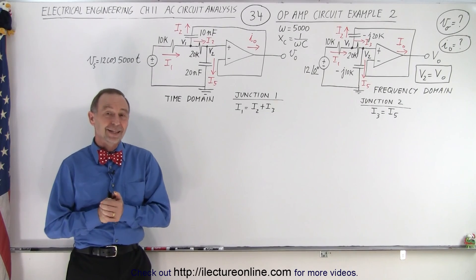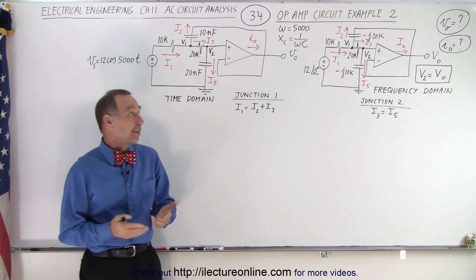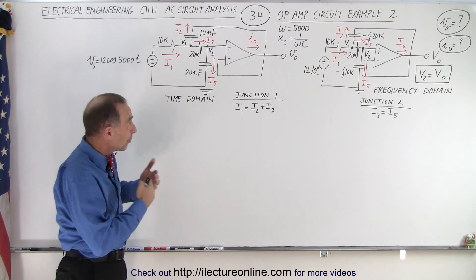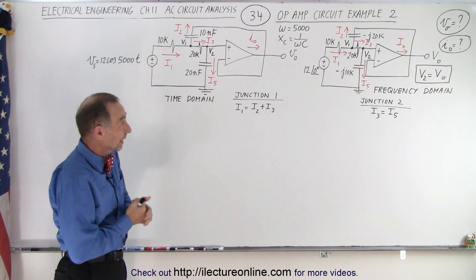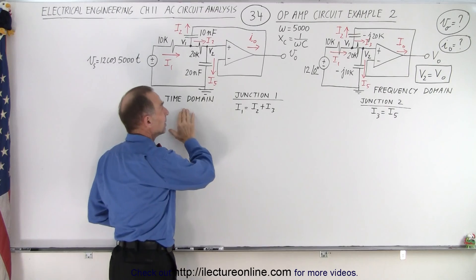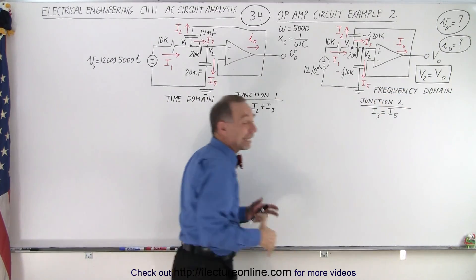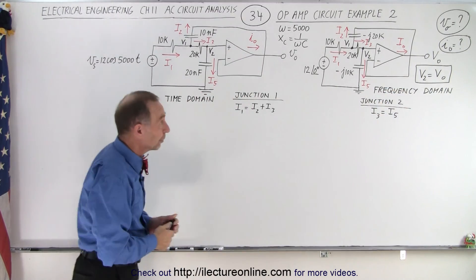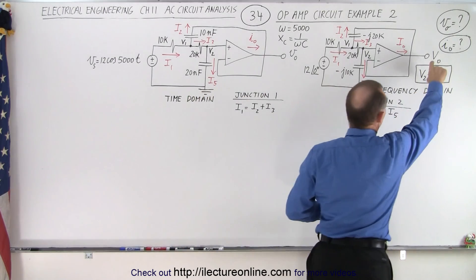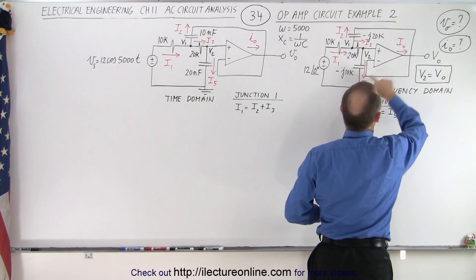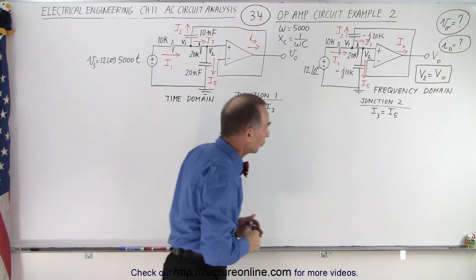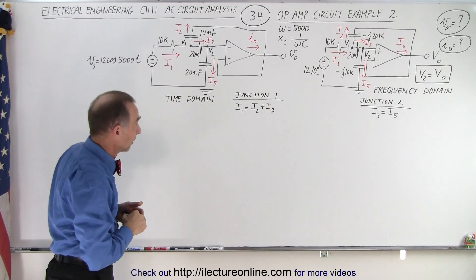Welcome to our lecture online. Here's our second example of how to solve an operational amplifier circuit. Again, what we do is we take the circuit from the time domain into the frequency domain to make it easier to solve it. Essentially what we're trying to find is the output voltage relative to ground and the output current of the operational amplifier.